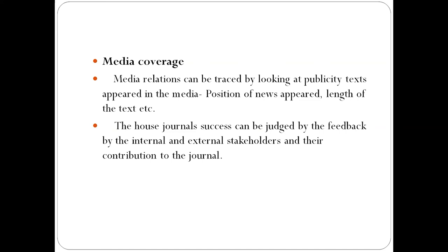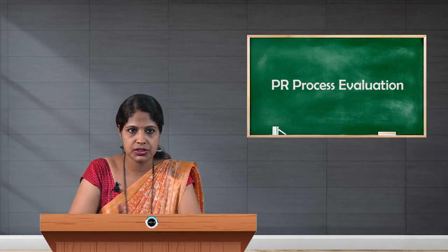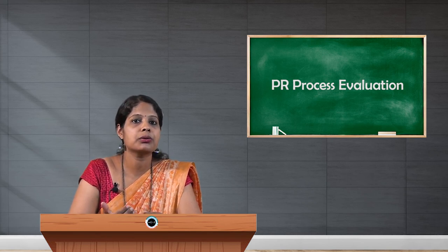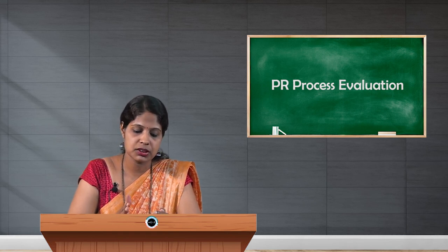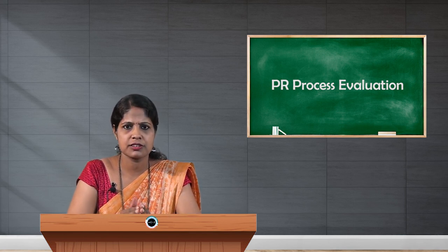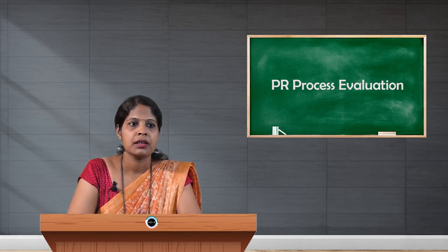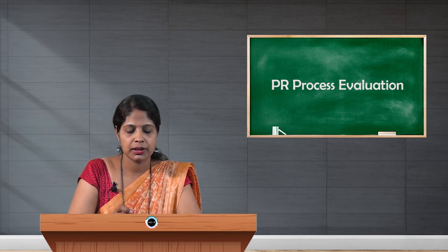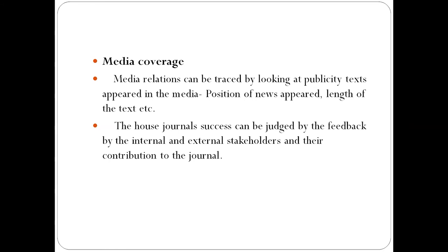The last method is to evaluate media coverage. If your plan is to disseminate information through media, the immediate evaluation method is to look at the publicity text that appeared in the media — the position where the news appeared and the length of text. Normally, the length of text and the position of your message contribute a lot to the dissemination of information. If your information is published on the front page, there is a greater chance of more people reading your message and your message reaching more people. If your plan is to bring out a house journal, its success can be judged by feedback from internal and external stakeholders and their contribution to the journal.